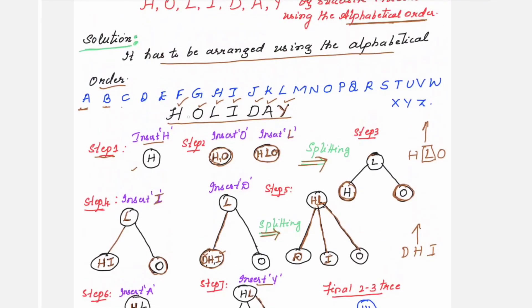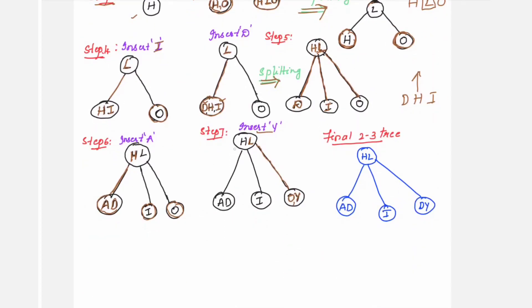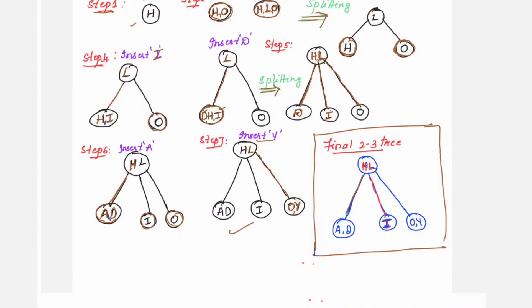We have completed all the elements: H, O, L, I, D, A, Y. There are no more elements. This one becomes the final 2-3 tree. I have written it again.